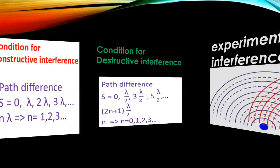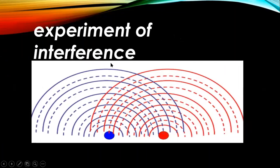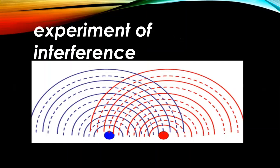Now let's look at an experiment on interference. For example, you have speaker one and speaker two. If both speakers are attached to the same musical instrument or sound system, then the waves produced will have the same amplitude, frequency, and direction, because they are connected to one sound source.